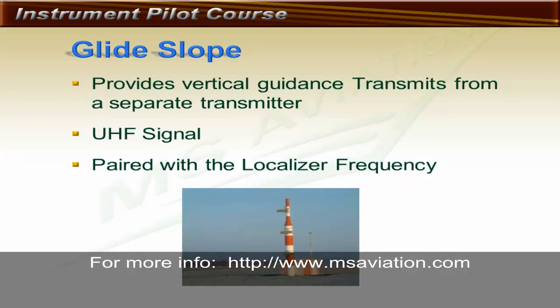The glide slope provides vertical guidance all the way to the missed approach point, and in special cases, all the way to touchdown. The glide slope is not connected to the localizer; it is a separate signal transmitted from the side of the runway and upward. The glide slope uses an ultra-high frequency signal, so its signal will not be usable as far as a localizer signal. Even though the glide slope is unconnected to the localizer, the glide slope's frequency is paired to the localizer frequency, meaning that when the pilot selects the localizer frequency, the radio will automatically tune its glide slope receiver to the glide slope frequency.